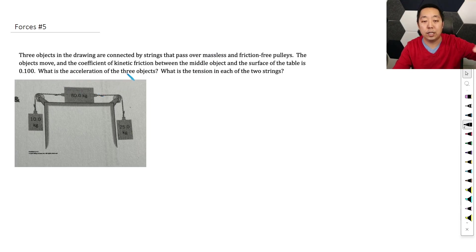We have three objects in the drawing connected by strings that pass over massless and frictionless pulleys. Objects move and the coefficient of kinetic friction between the middle object and the surface of the table is 0.1. What is the acceleration of the three objects? Okay, so let's do this problem without systems first.